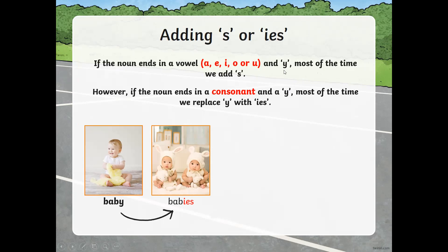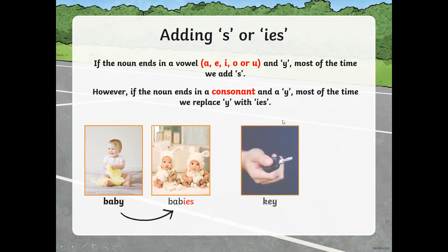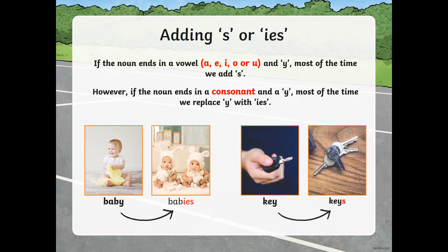So mostly, when we have a consonant with the letter Y, we replace it and add IES. But if we have a vowel with the letter Y, we only add an S. Like the word 'key' — how are we going to write it? Keys. Do you see — only an S at the end.